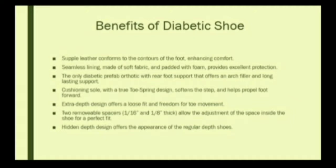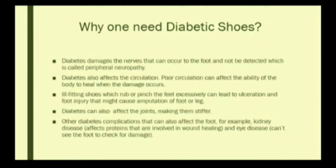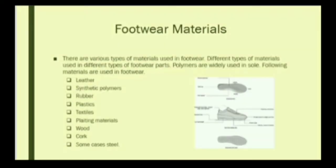Extra depth design offers a loose fit and freedom for toe movement. Why does one need diabetic shoes? Diabetes damages the nerves, which can occur in the foot and not be detected — this is known as peripheral neuropathy. Diabetes also affects the circulation of blood, and poor circulation can affect the body's ability to heal when damage occurs. Diabetes can also affect the joints, making them stiffer. Other diabetic complications such as kidney disease affect proteins involved in wound healing, and eye disease means the person may not be able to see where the foot is damaged.